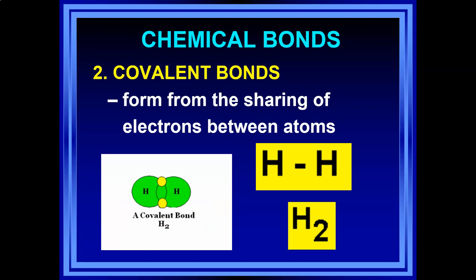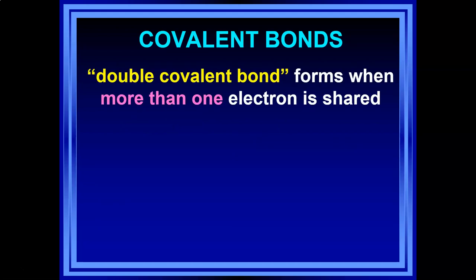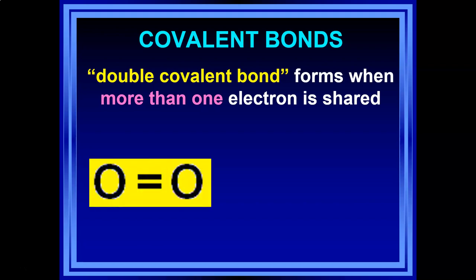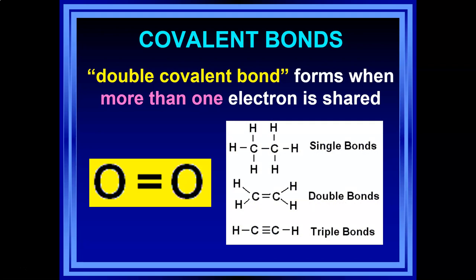You can have a single covalent bond (one line, one shared electron), a double covalent bond (two lines, two shared electrons), or a triple covalent bond (three lines, three shared electrons). For example, two oxygens can share with a double bond, and carbon to carbon can be a triple bond while carbon to each hydrogen is a single covalent bond. The lines give you an indication of the specific relationship between partners.